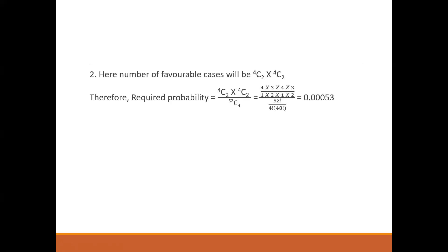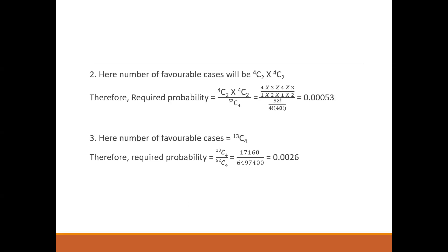For the third one, where we have all clubs — how many clubs do we have? We have a total of 13 clubs in a pack of 52 cards. So the number of favorable cases in case of clubs will be 13C4. And as you know the total is 52, so that probability can be written as 13C4 divided by 52C4. This is my third answer, which will give you 0.0026 as the answer.